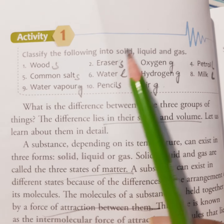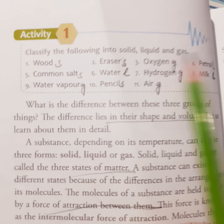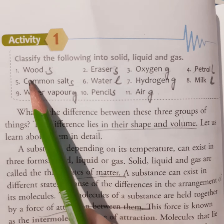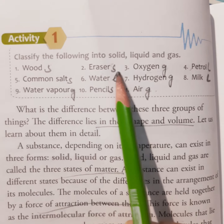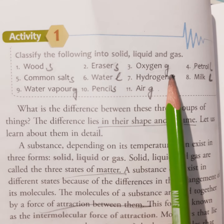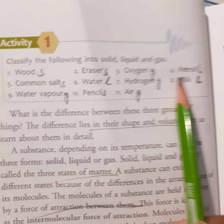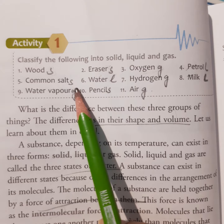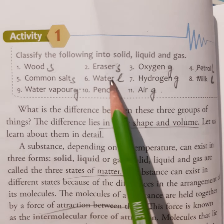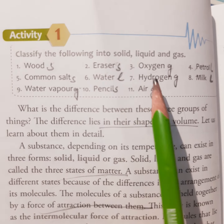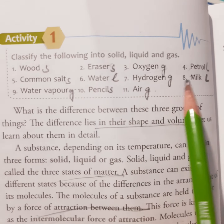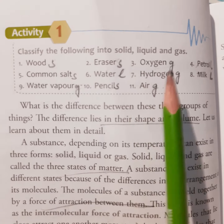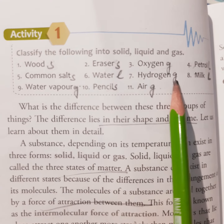Classify the following into solid, liquid and gas. Wood — solid, eraser — solid, oxygen — gas, petrol — liquid, common salt — solid, water — liquid, hydrogen — gas, milk — liquid, water vapor — gas, pencil — solid, air — gas.